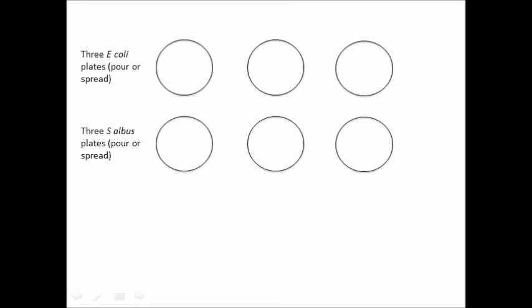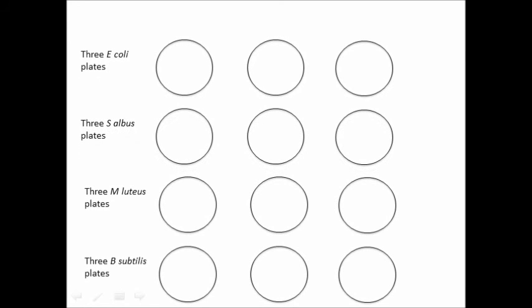Begin by preparing three pour plates or three spread plates of Escherichia coli using aseptic procedures, and label your three dishes. Then prepare three plates of Staphylococcus albus and label them. Finally, three of Micrococcus luteus and three of Bacillus subtilis, and label them too.